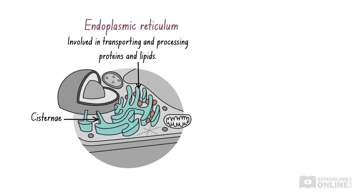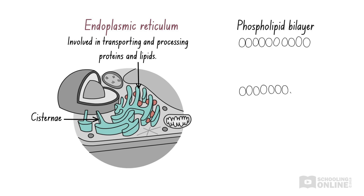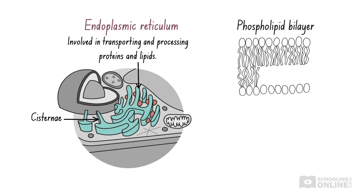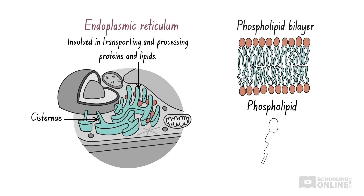The cisternae are composed of one phospholipid bilayer, which is made from two layers of phospholipid molecules. These phospholipid molecules are comprised of a phosphate head and a fatty acid tail. We'll discuss the phospholipid bilayer in our upcoming videos on the cell membrane.